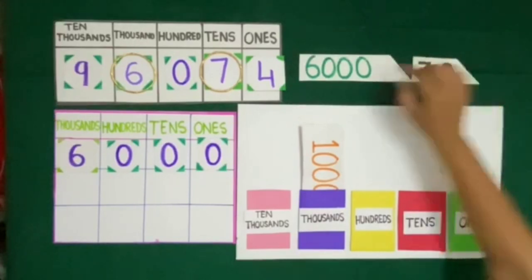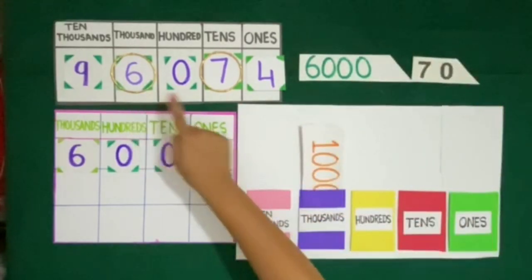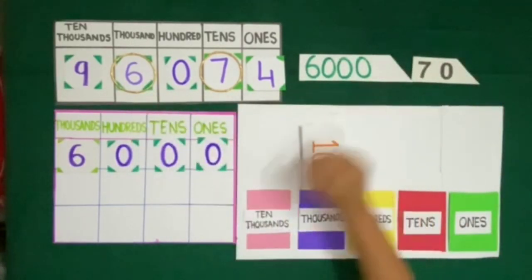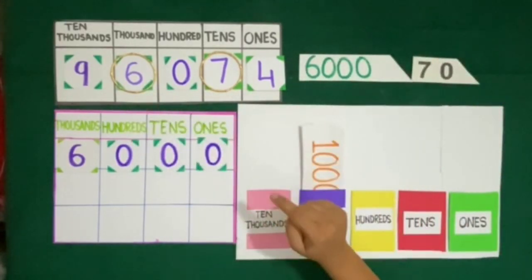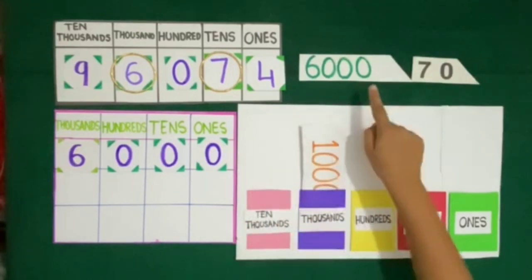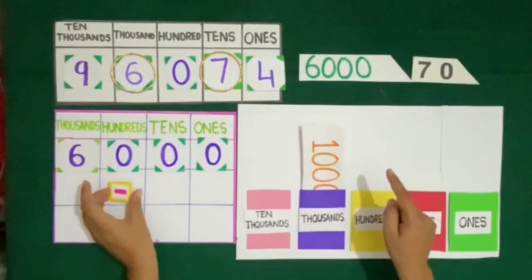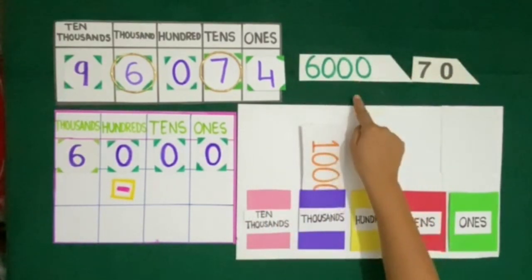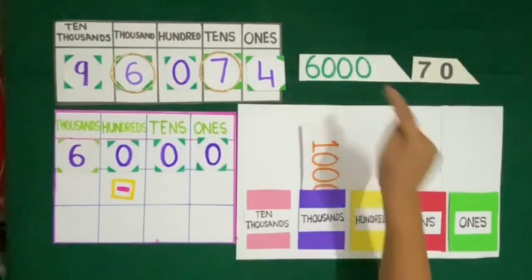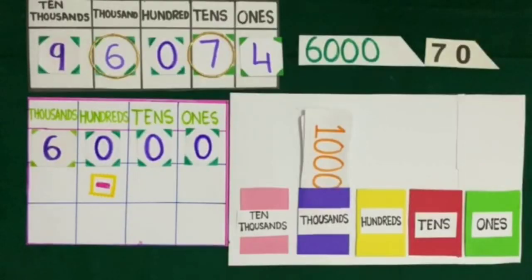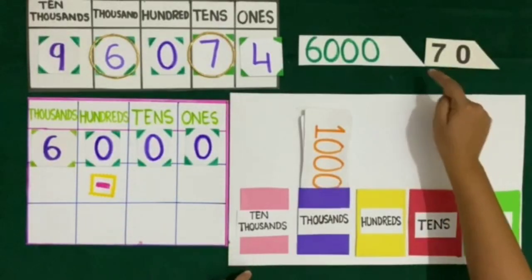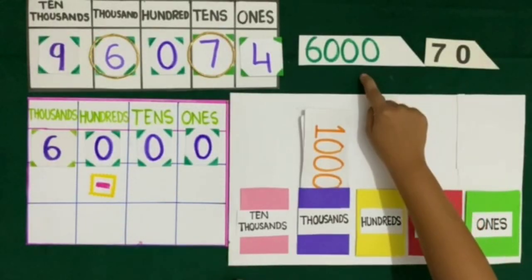Now to find the difference between the place values of these two digits, we will subtract 70 from 6000.